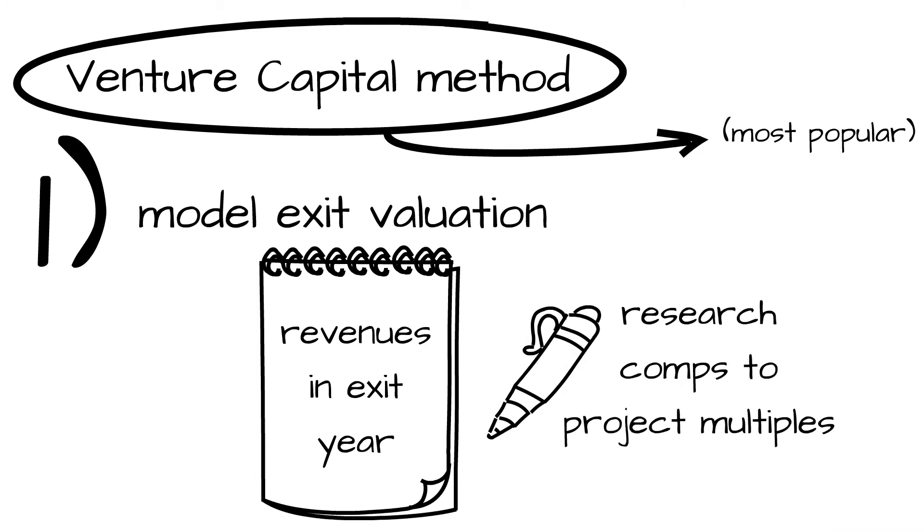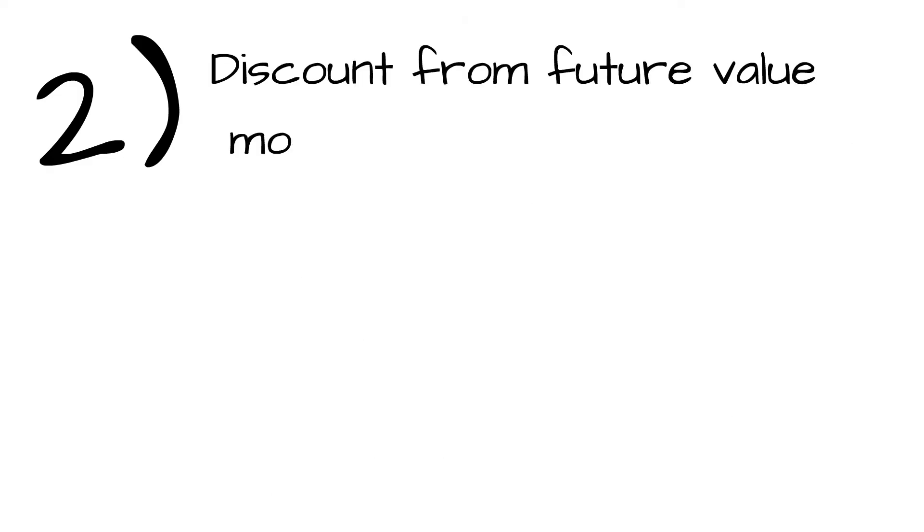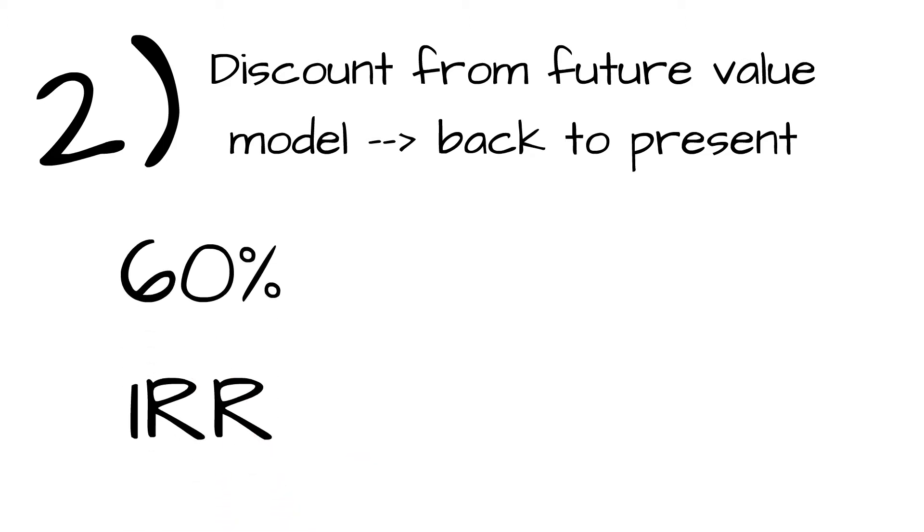Once we model the exit, then we'll discount back to the future. It's a discounted cash flow model in some ways, and we'll discount it typically at about a 60% IRR for venture capital deals. That comes to about a 10x return for investors over a five-year period.